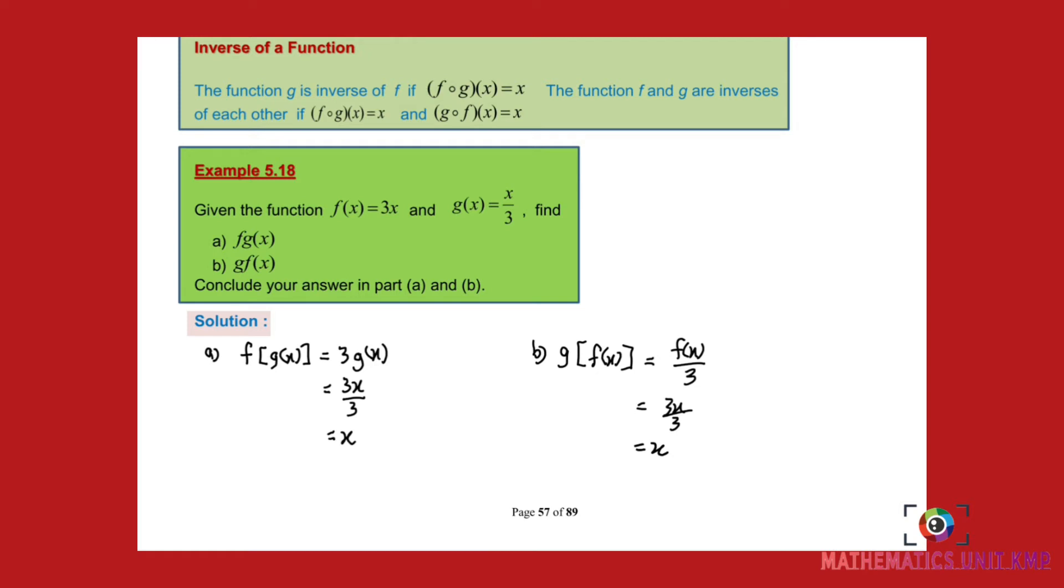So since f(g(x)) equals x and g(f(x)) equals x, as you can see in the notes given, the conclusion is f and g are inverses of each other.